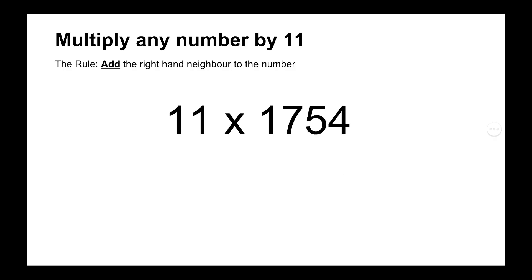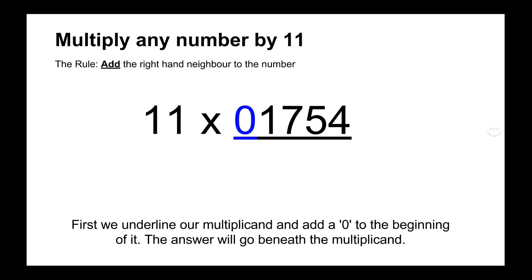Now we can try some harder numbers, and what I mean by harder numbers is that we're going to have to start carrying the 10, and I'll show you what I mean in a minute. So 11 times 1,754, starting off we add the 0 to the beginning of our multiplicand and underline it.